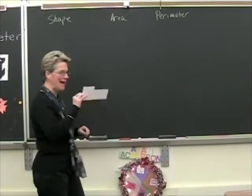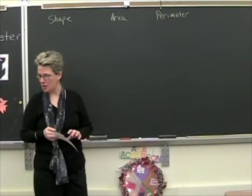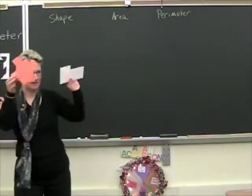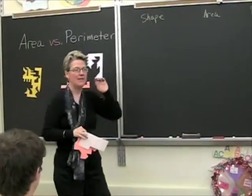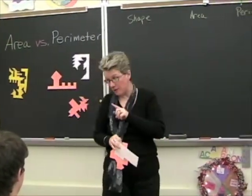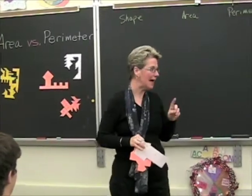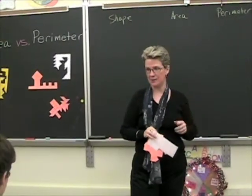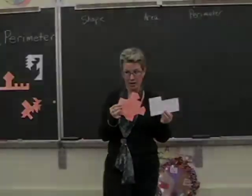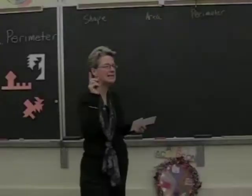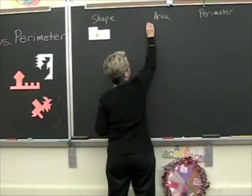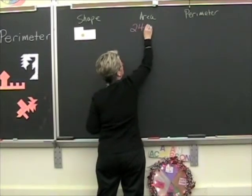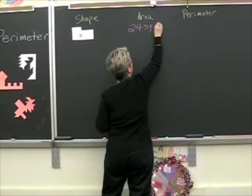Now that we have our little shapes all different sizes, the thing that they all have in common is that they're all exactly 24 square units, even though they're vastly different shapes. To examine the perimeters now, we're going to start with this little one right here. The area — we figured those all out yesterday — 24 square units.